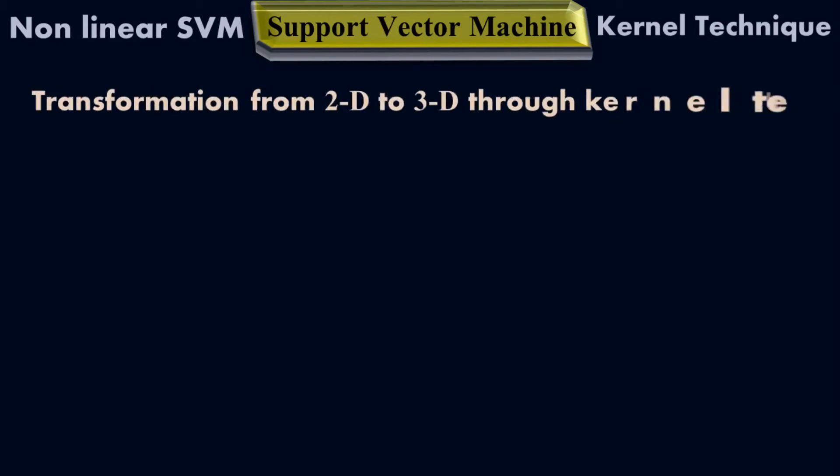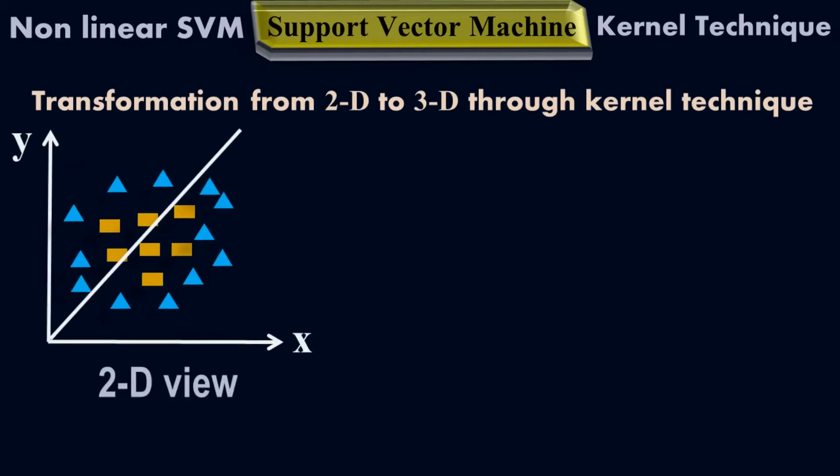Now let's check the transformation from two-dimension to three-dimension through the kernel technique. If we have non-linear data in a two-dimension view, we are going to change from two-dimension into three-dimension — going from low-dimension into higher-dimension.